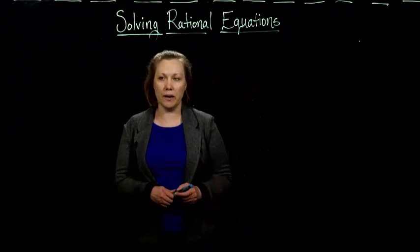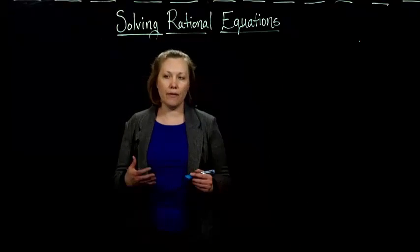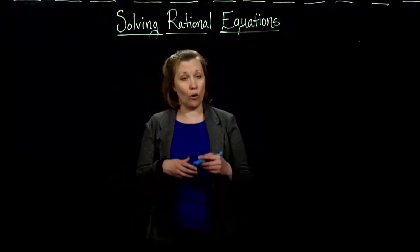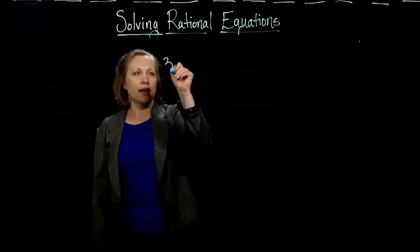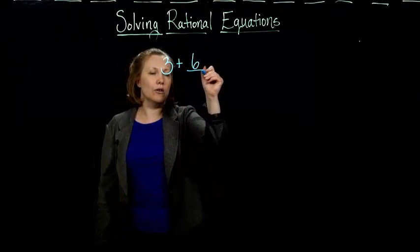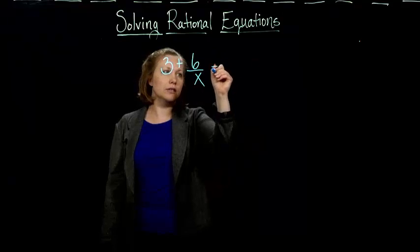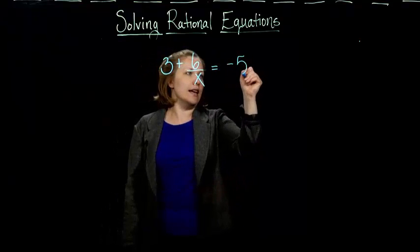Another type of rational equation you might run into is when you have an x in the denominator, or a variable in the denominator. So, for example, if I had something like 3 plus 6 over x equals negative 5.